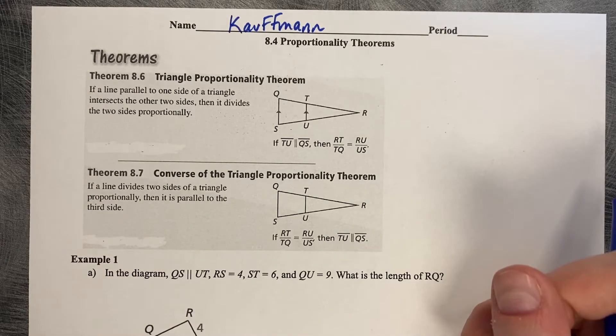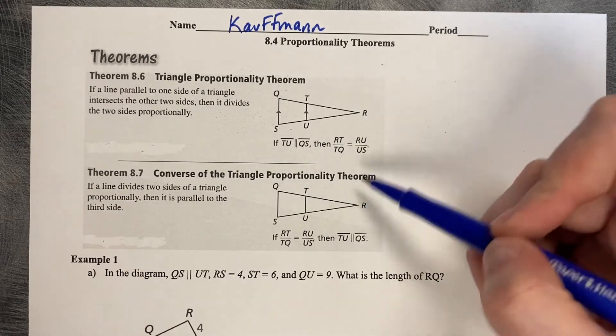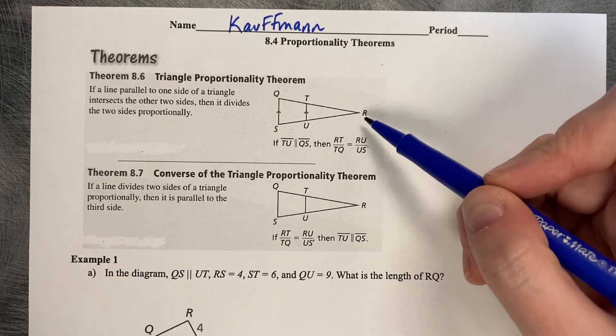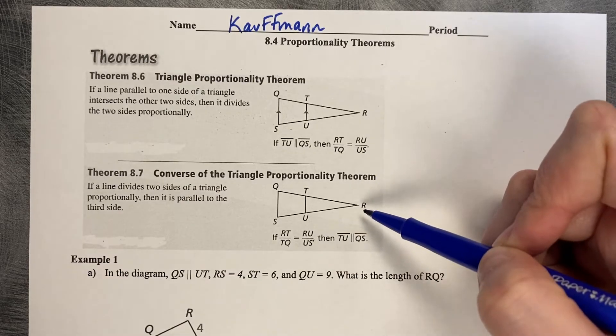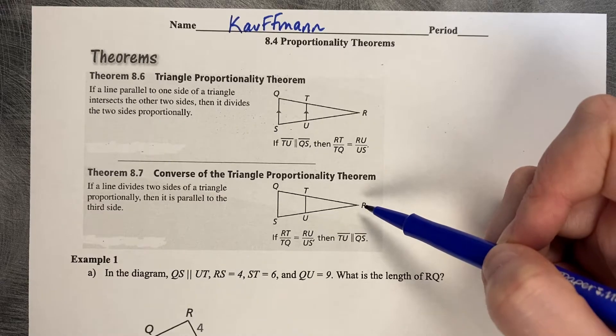8.4 Proportionality Theorems. We've got two proportionality theorems here. One of them is the forward direction, one of them is the backwards. So as long as you understand one of the directions, that's good.